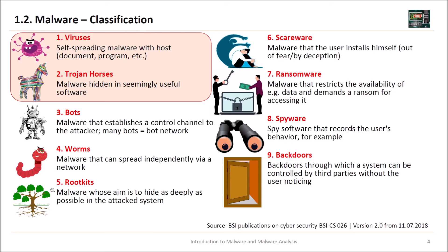We have rootkits — malware whose aim is to hide as deeply as possible in the attacked system. The name comes from the term 'root,' the super user of a system with the highest-level privileges; rootkits try to get root access. Then we have scareware — malware that the user installs himself out of fear or deception. For instance, you get a message that a virus has been detected and if you install the software it will remove it — but in fact it installs the malware itself.